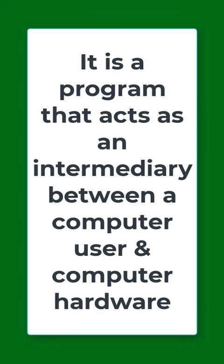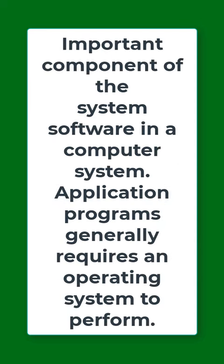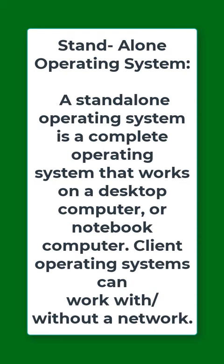Basically, an operating system is a program that acts as an intermediary between a computer user and computer hardware. The operating system is an important component of the system software in a computer system, and application programs generally require an operating system to perform.